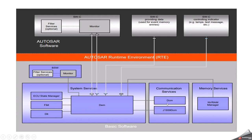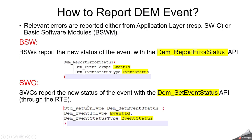DEM is connected with DCM to read the fault from DEM. For example, by using service 19, DCM can read the reported fault, and DEM will be associated with NVM to store the reported event. It will be connected with ECU state manager to initialize in the early driving cycle, so the ECU state manager is responsible to initialize DEM. A DEM event can be reported from two ways: one is base software, another is software component.